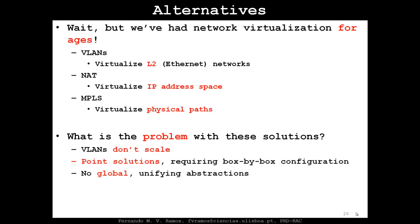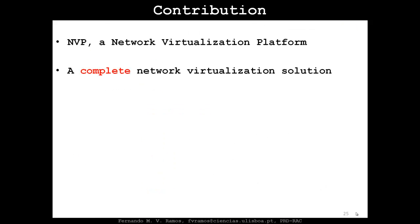The main problem with these solutions is that VLANs and others don't scale well. More importantly, they're all point solutions that require box-by-box configuration. They don't offer global unifying abstractions, and in short, they do not fully decouple the virtual network from the physical substrate network.